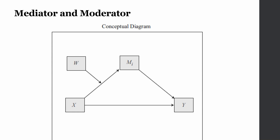In the diagram that you see on your screen, W is a moderator that is moderating the relationship between X and M. The arrow from W is pointing towards another arrow. Whereas M is a mediator and an arrow is pointing towards the variable rather than the relationship. So a moderator points towards the relationship, whereas a mediator has an arrow pointed towards it and an arrow pointing from it towards another variable.